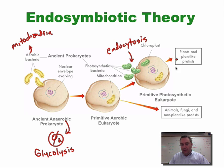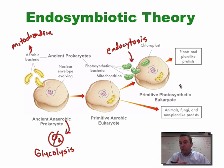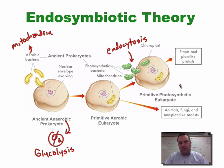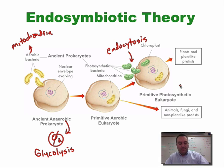From there you could have plant-like protists or animal-like protists — these would be your first eukaryotic cells. From that point you're able to evolve into all the eukaryotic creatures we see today, including plants, animals, fungus, and protists.